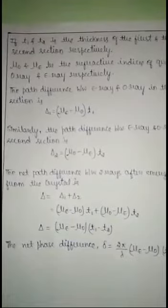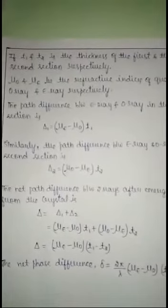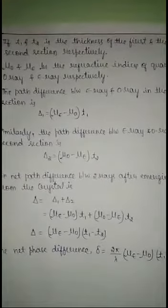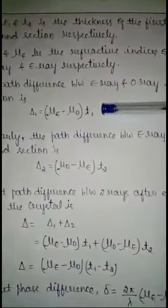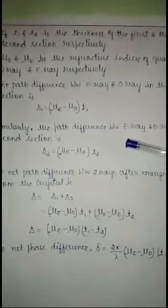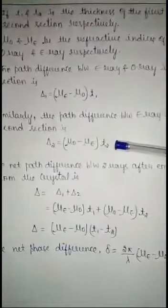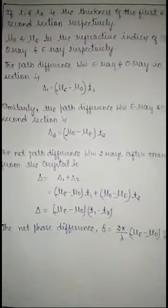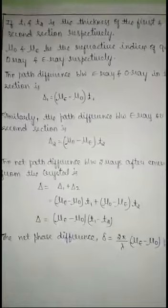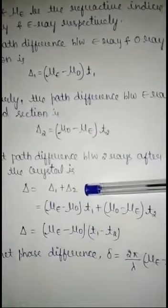If T1 and T2 be the thickness of the first and second sections respectively, and μO and μE be the refractive indices of quartz for ordinary and extraordinary ray respectively, then the path difference between the E-ray and O-ray in the first section ABC is given by δ1. Similarly, the path difference between E-ray and O-ray in the second section ADC is given by δ2. The net path difference between the two rays after they emerge out from the crystal is given by δ = δ1 + δ2.